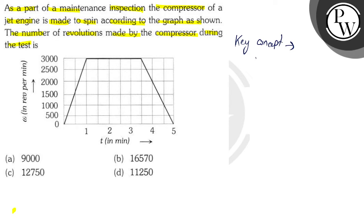Key concept is the relation omega equals omega naught plus alpha t, and the second key concept is theta equal to omega naught t plus half alpha t square. Now to solve this question I will use this key concept.